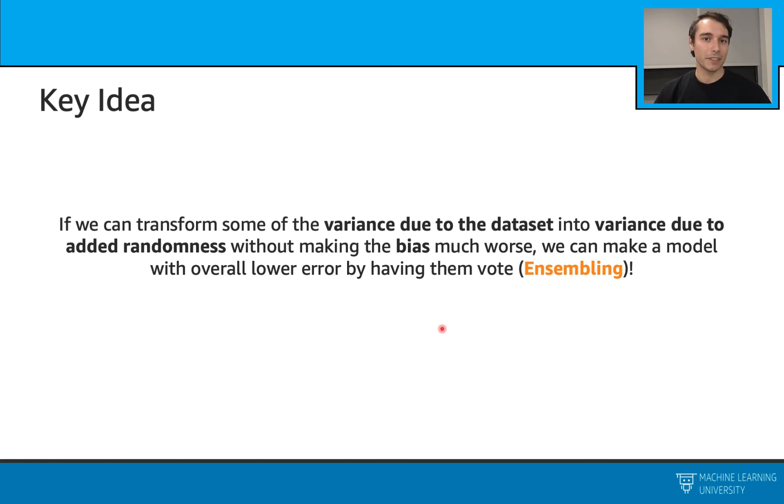With ensembling, we can reduce the overall variance. Even if we increase the bias a little bit, if the reduction is more, we have more improved models. And this will be the key idea behind ensembling.